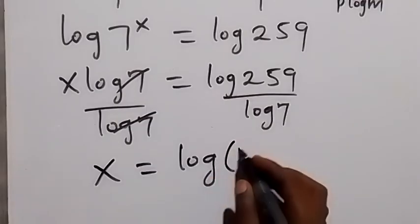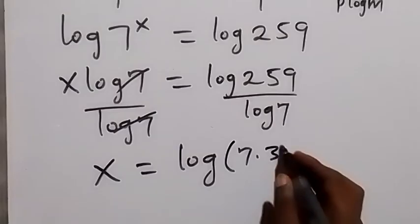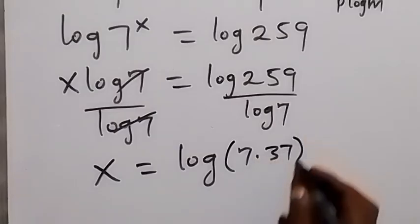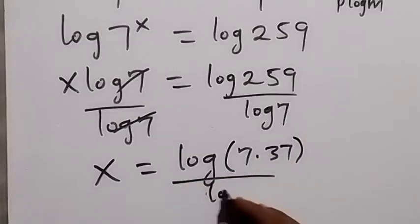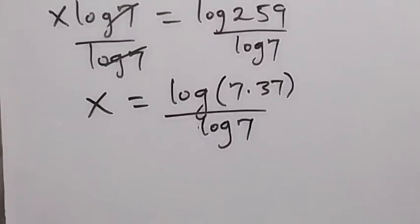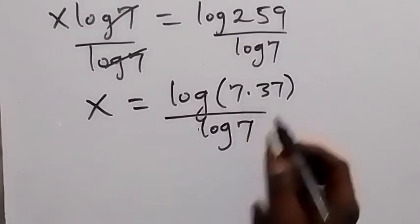Let's write that as 7 multiplied by 37, then over log 7. And then from the law of logarithm, when we separate this log,